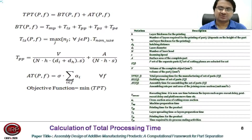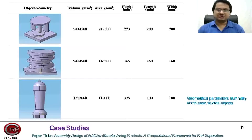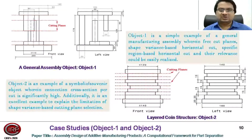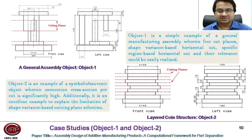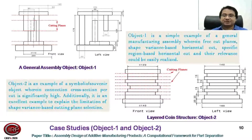All notations and their descriptions are shown in the right-side table. The proposed computational framework for part separation is implemented for three different shape geometries. The major geometrical parameters like volume, area, height, length, and width are tabulated for reference. Object one is named as a general assembly object and object two is a layered coin structure. Object one has five probable cutting planes, whereas object two has nine probable cutting planes, and front and left views of both objects are shown with dimensions.